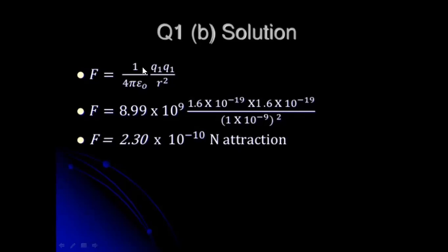For letter B, using 1 over 4 pi epsilon-naught equal to 8.99 times 10 raised to 9, multiply it with the given charges — 1.6 times 10 raised to negative 19 times 1.6 times 10 raised to negative 19 — over the distance of 1 nanometer, which equals 1 times 10 raised to negative 9 meters, squared. This gives an answer of 2.3 times 10 raised to negative 10 newtons. Hence, these charges are in attraction.